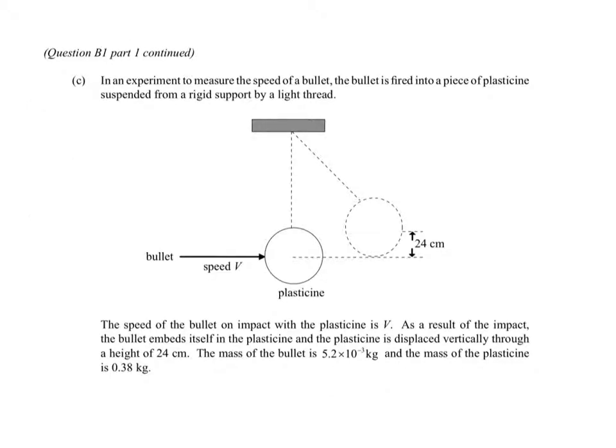This question is talking about momentum. It says, in an experiment to measure the speed of a bullet, the bullet is fired into a piece of plasticine suspended from a rigid support by a light thread. The speed of the bullet on impact with the plasticine is V. As a result of the impact, the bullet embeds itself in the plasticine. The plasticine is displaced vertically through a height of 24 centimeters. The mass of the bullet is 5.2 times 10 to the negative 3 kilograms, and the mass of the plasticine is 0.38 kilograms.